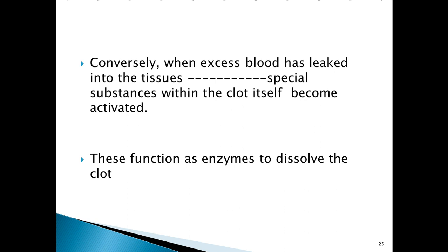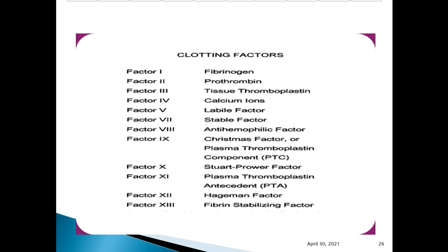Here is the list of clotting factors — you must remember their names and numbers. Factor 1 is fibrinogen; factor 2 is prothrombin; factor 3 is tissue thromboplastin; factor 4 is calcium ions; factor 5 is labile factor; factor 6 is not present; factor 7 is stable factor; factor 8 is anti-hemophilic factor; factor 9 is Christmas factor; factor 11 is plasma thromboplastin antecedent; factor 12 is Hageman factor; and factor 13 is fibrin stabilizing factor.